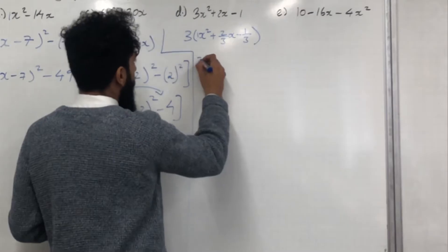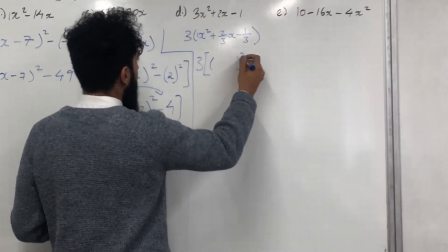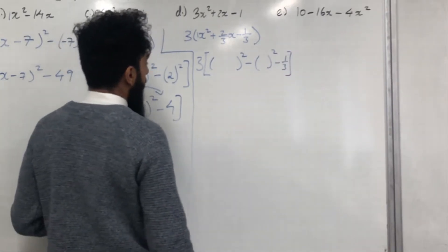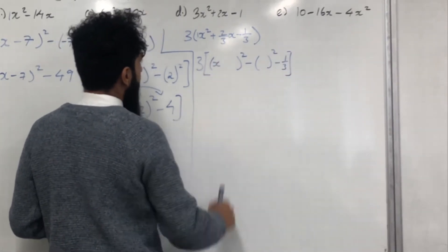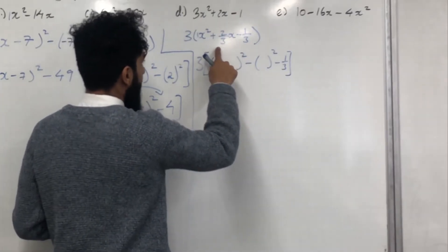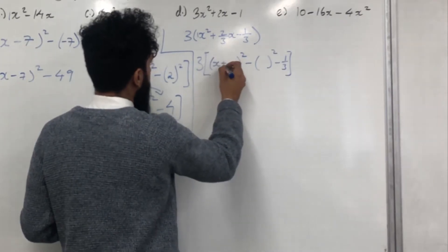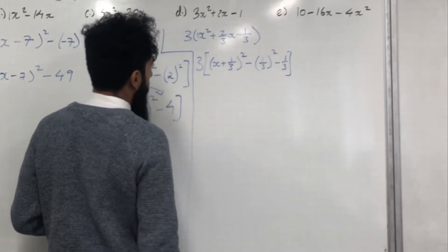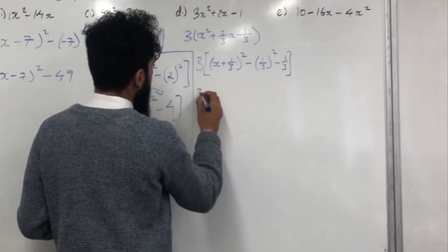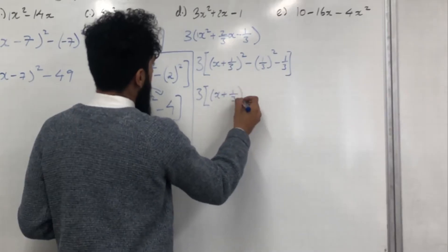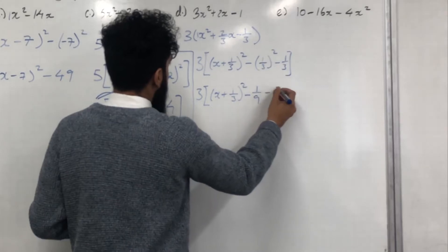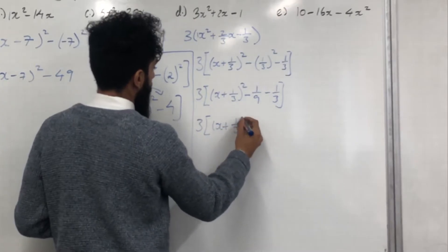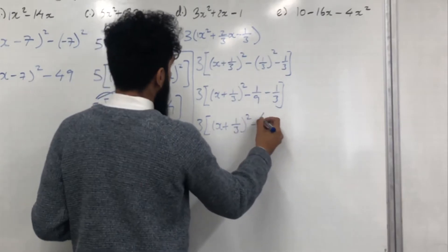We write 3 with a square bracket, then bracket squared minus bracket squared, minus 1/3, then close the square bracket. We stick in x and look at the coefficient of x inside the bracket, which is 2/3. Half of 2/3 is 1/3, so we put positive 1/3 in both places. Simplifying: 3[(x + 1/3)² − 1/9 − 1/3]. Combining −1/9 and −1/3 gives −4/9, so we have 3[(x + 1/3)² − 4/9].